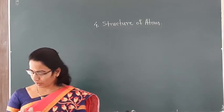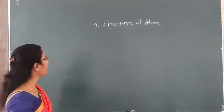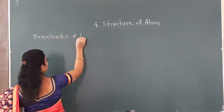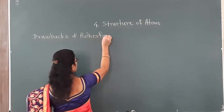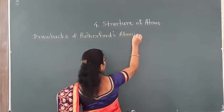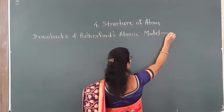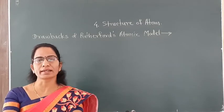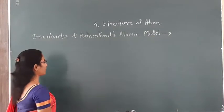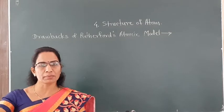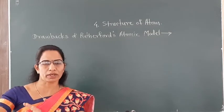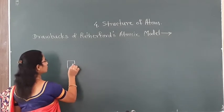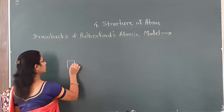Today we will see the drawbacks of Rutherford's atomic model. In lower standard, you studied Rutherford's alpha particle scattering experiment. Rutherford struck a beam of alpha particles on a very thin gold foil. He used an alpha particle source kept in a lead block — one of the radioactive elements.